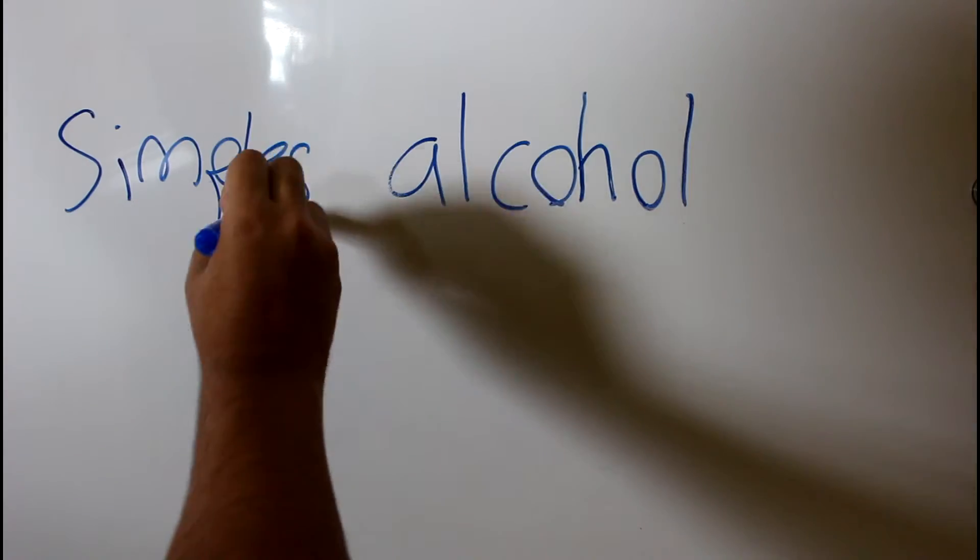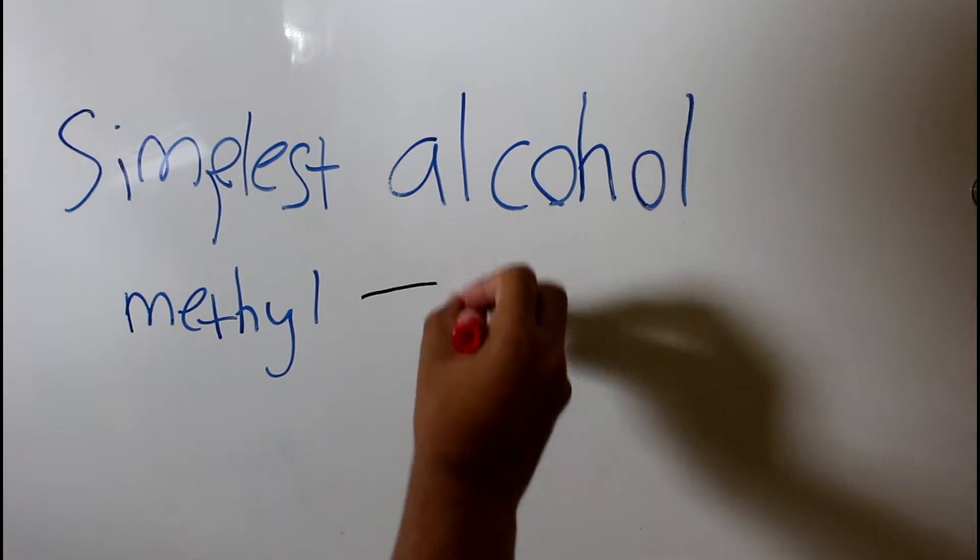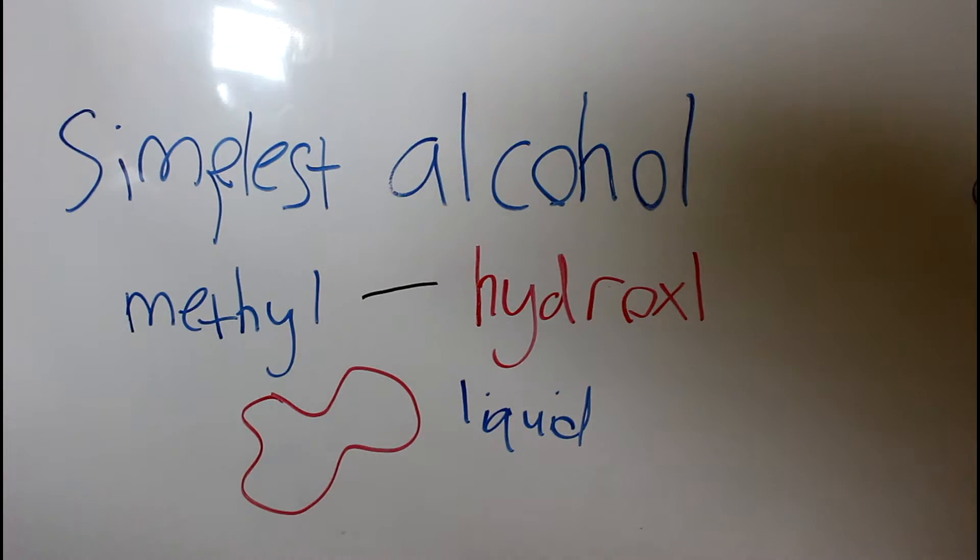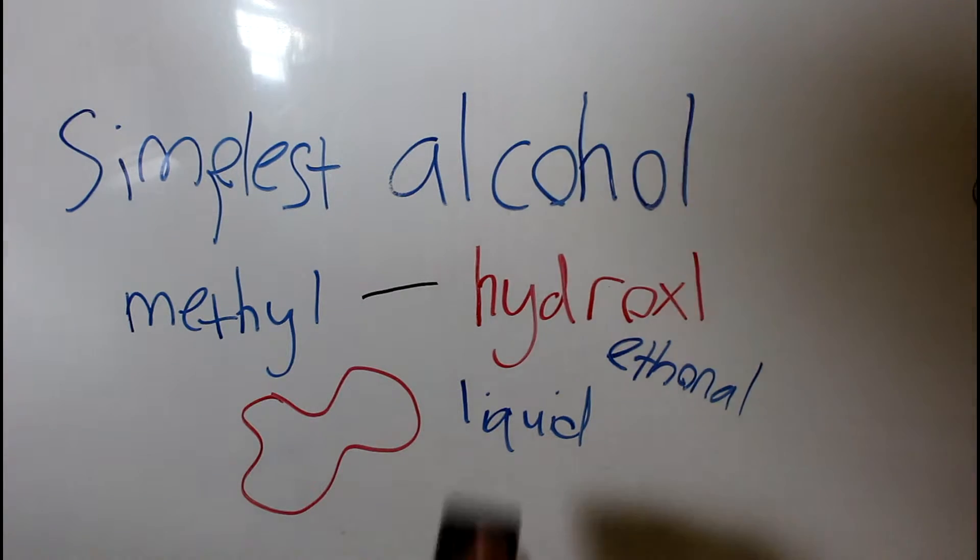Methanol is the simplest alcohol because it has only one methyl group linked to one hydroxyl group. It is a light, volatile, colorless liquid with many similarities to ethanol or drinking alcohol.